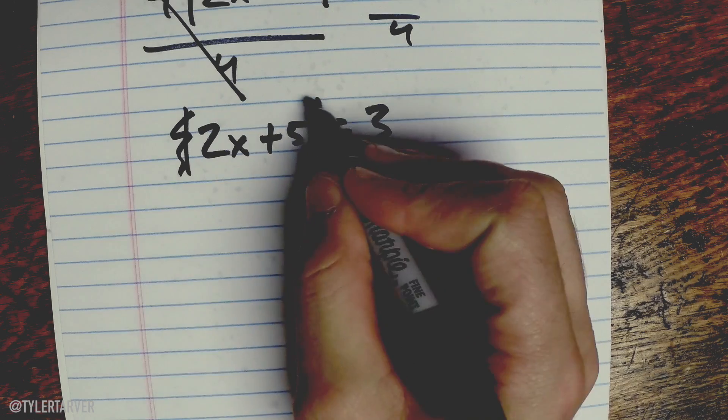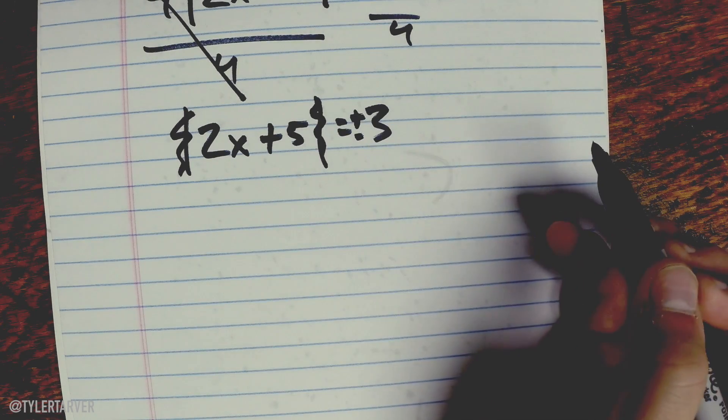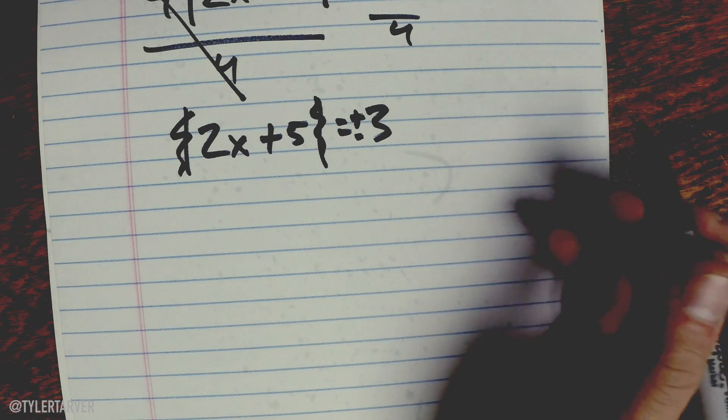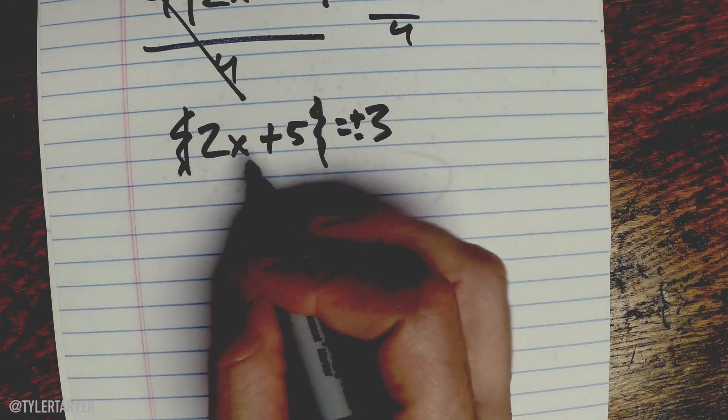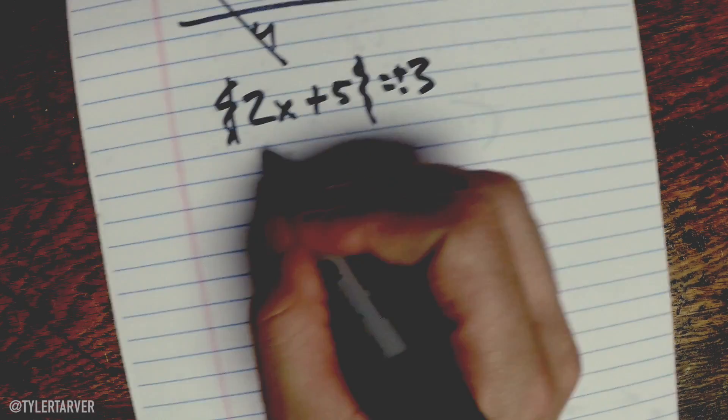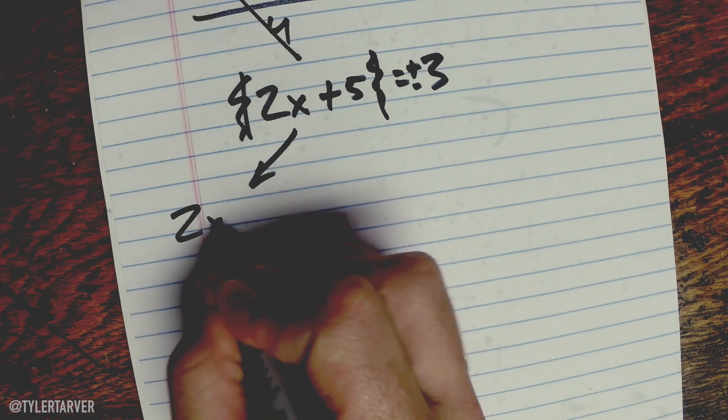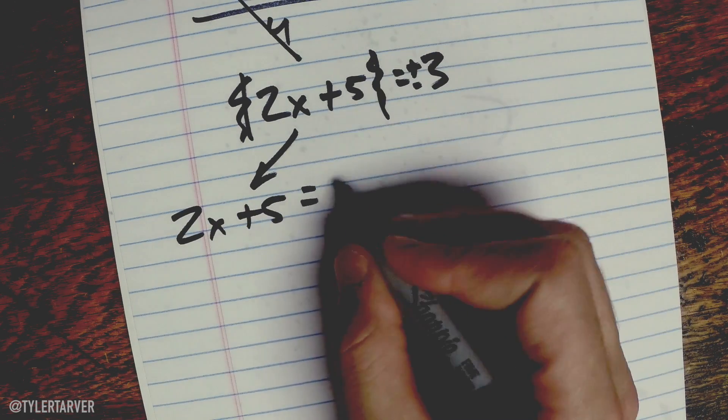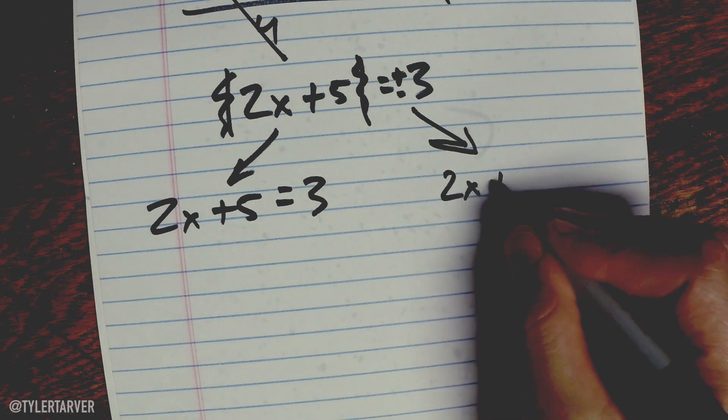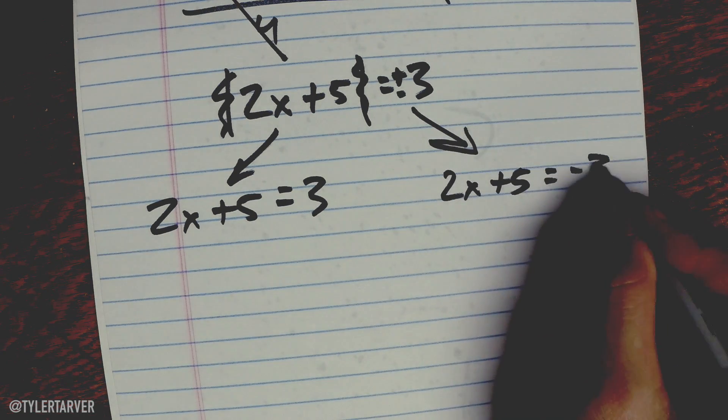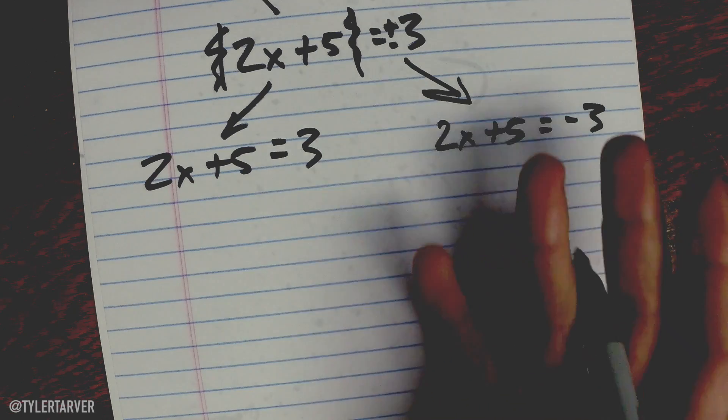So to get rid of these, we got to do plus or minus negative three. What we're gonna do is we're gonna solve it. We got this version which is 2X plus 5 equals positive 3, and then we got our other version which is 2X plus 5 equals negative 3, and we solve it for both equations and we can find our two versions of X.